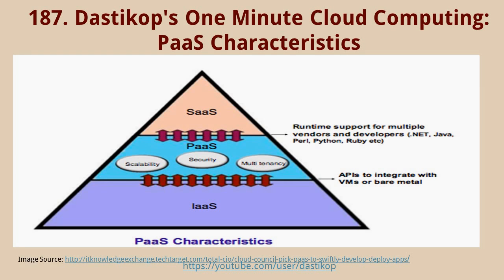In this one-minute presentation, I'll be talking about PaaS characteristics in a pictorial way. PaaS actually comes between Infrastructure as a Service and SaaS. Some of the features supported by PaaS include runtime support for multiple vendors and developers. For example, if your application involves development using components like .NET, Java, Perl, Python, Ruby — all of these are supported by the PaaS platform.